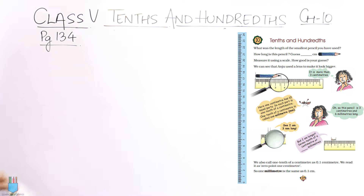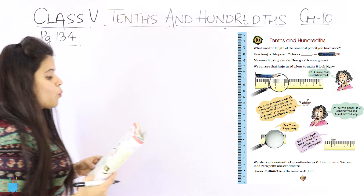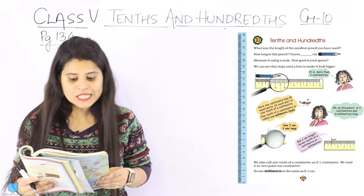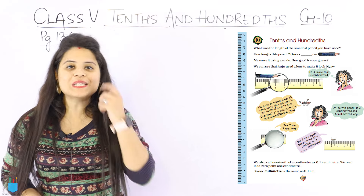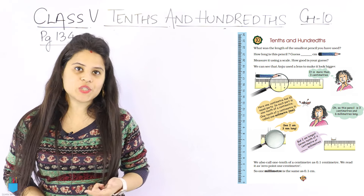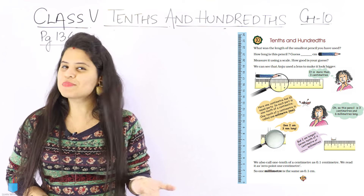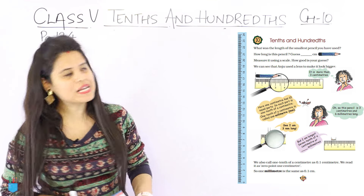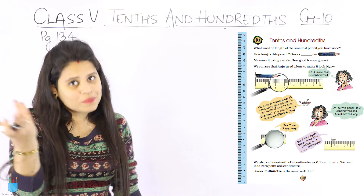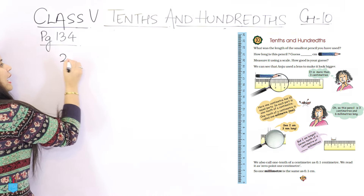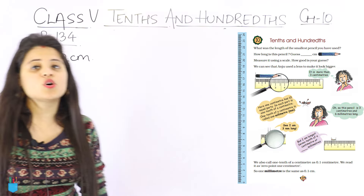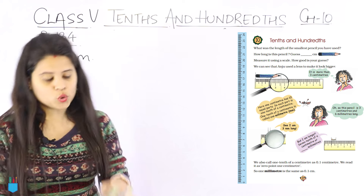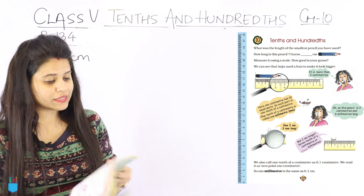If you have your books, very good — otherwise there is the page here. The question is: what was the length of the smallest pencil you have used? It's a random question — you can say any answer. We can write 2 cm. Let's suppose the smallest pencil you have used is 2 cm.